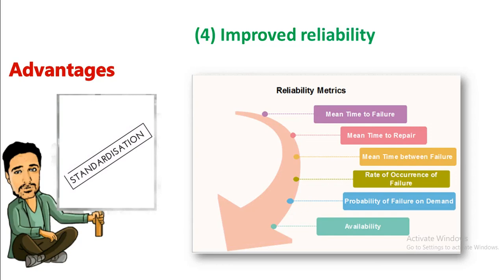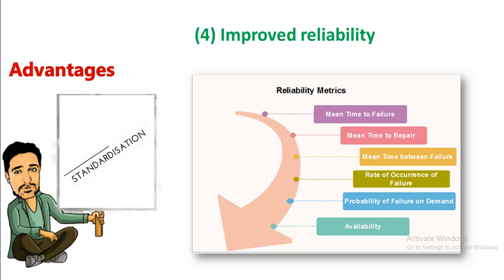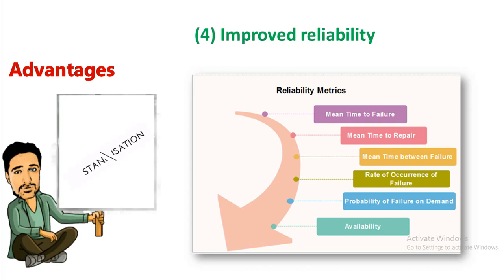Reliability means the ability of a material or product to function for a longer amount of time. If standardized parts are manufactured, they will obviously be reliable — they will function for a longer amount of time and will need less maintenance.